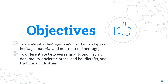Our objectives for today are to define what heritage is, list the two types of heritage, differentiate between remnants and historic documents, ancient clothes, and also handicrafts and traditional industries.